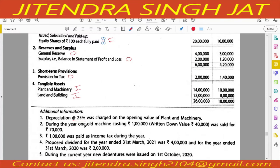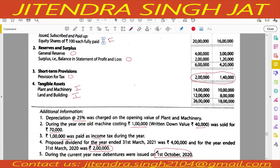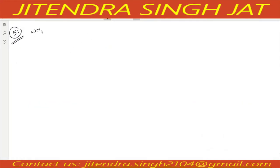During the year one old machinery costing 1 lakh, written down value 40,000, was sold for 70,000 - so we need to prepare plant and machinery account. One lakh was paid as income tax and opening and closing provision for taxes are given - we need to prepare provision for tax account. Proposed dividend for year ended 2021 was 4 lakh and 2020 was 2 lakh, so previous year proposed dividend of 2 lakh is used during current year. New debentures were issued on 1st October - three working notes to prepare.